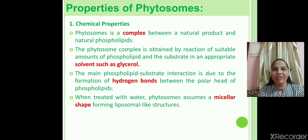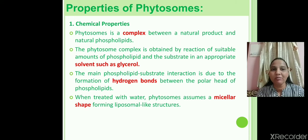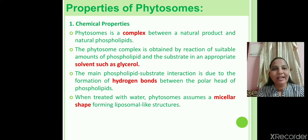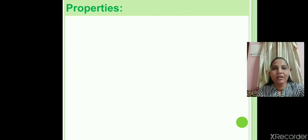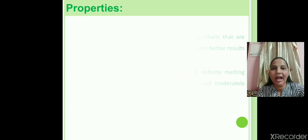Properties of phytosomes — two types: chemical properties and biological properties. In chemical properties, due to the presence of water-soluble constituents and phospholipids, there is formation of a hydrogen bond between the polar heads of phospholipids. When taken into water, phytosomes assume a micellar shape. In biological properties, phytosomes are an advanced form of herbal products that are better absorbed, giving them high bioavailability.